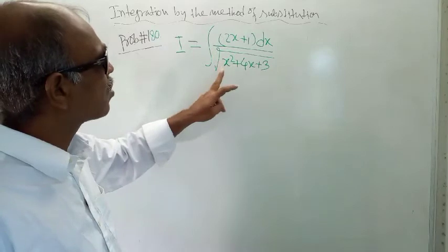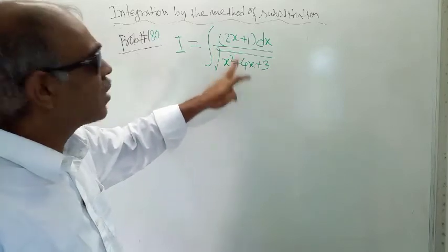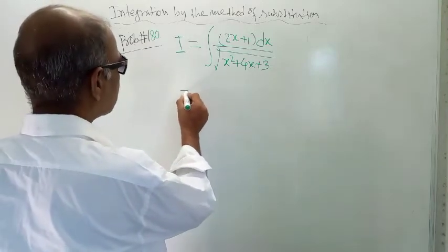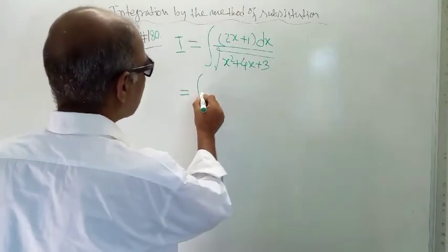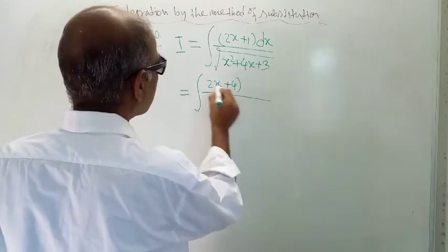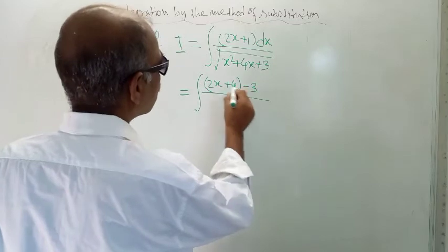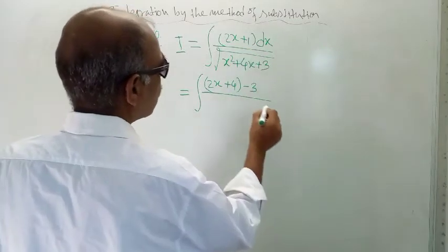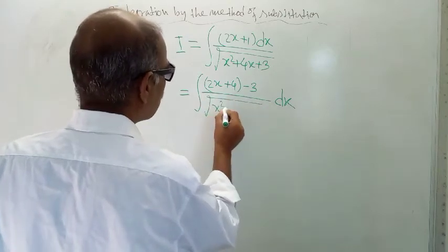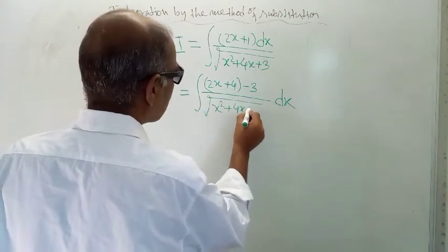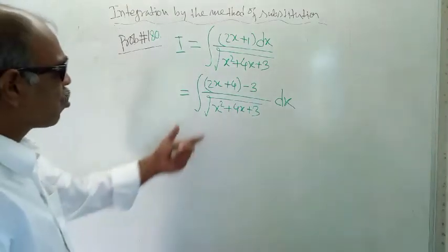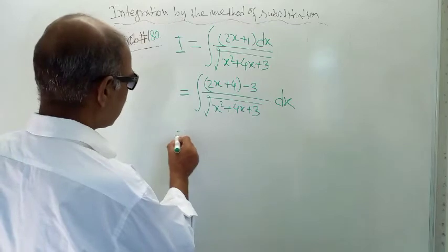You will see that this expression x squared plus 4x plus 3, the derivative of this is 2x plus 4, and here 2x is already present. So what we need to do is write this way: 2x plus 4 minus 3, so 4 minus 3 becomes 1. Write here dx and here you write the denominator.